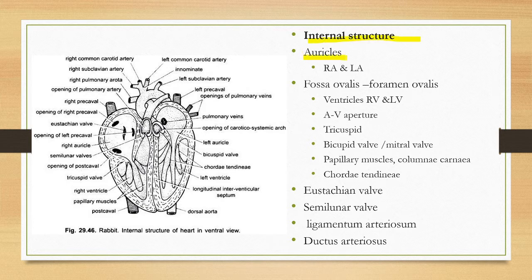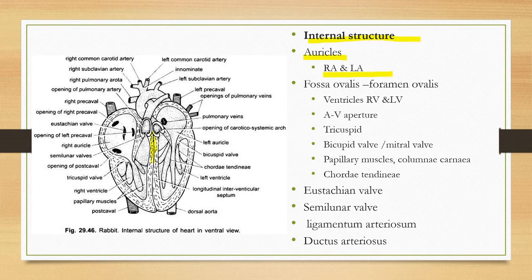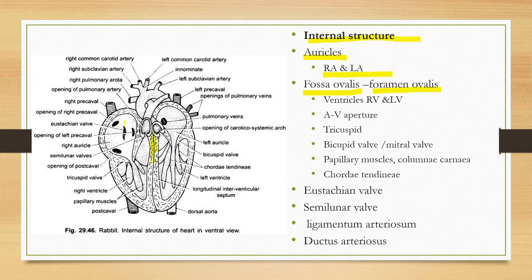In the internal structure, the auricles are divided into right and left auricles by an inter-auricular septum. In the embryonic period, the right auricle and left auricle communicate with each other through an opening called the foramen ovalis. In the later stages of embryonic development, this opening gets closed and is covered by a membrane called the fossa ovalis.